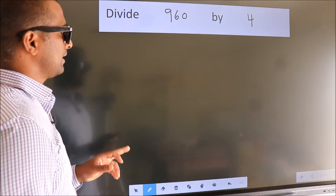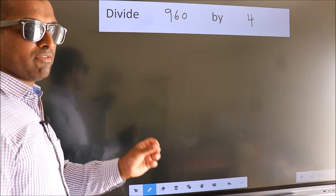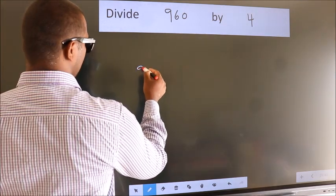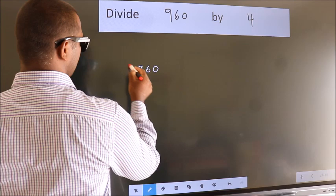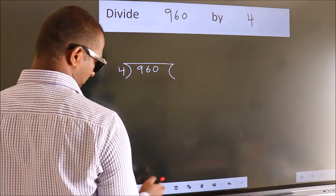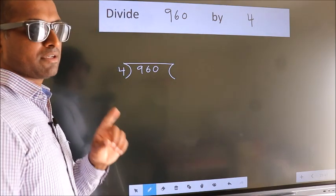Divide 960 by 4. To do this division, we should frame it in this way. 960 here. 4 here. This is your step 1.